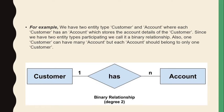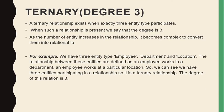Using binary relationships, it is easy to define and draw tables and show the relations. The third type is ternary, with degree three. A ternary relationship exists when exactly three entity types are participating. When such a relationship is present, we say the degree is three. As the number of entities increases in a relationship, it becomes complex to convert them into relational tables.